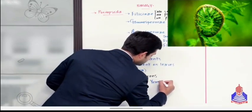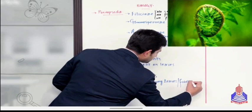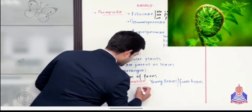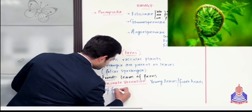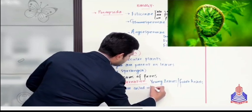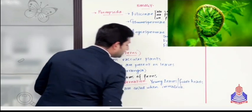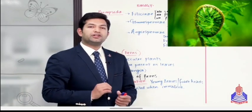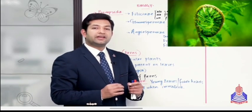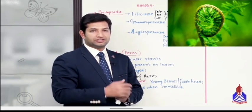The young leaves, they are also known as fiddleheads, of ferns. They are coiled when immature. All right, this condition is known as circinate vernation. अब ये वाली खसूसियत students हमें ferns के अंदर नज़र आती है, कि इनके जो leaves हैं जब पैदा हो रहे होते हैं या grow कर रहे होते हैं, तो उस वक्त इनमें ये coiled सा structure नज़र आता है। इस property को हमने नाम दे दिया है circinate vernation.